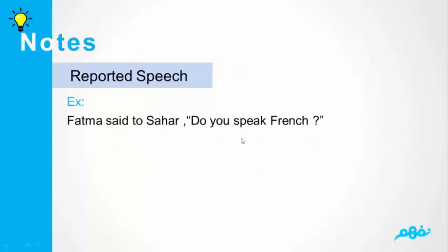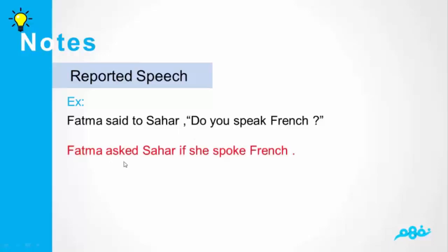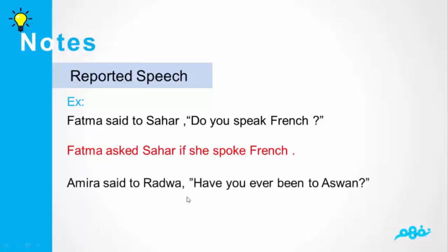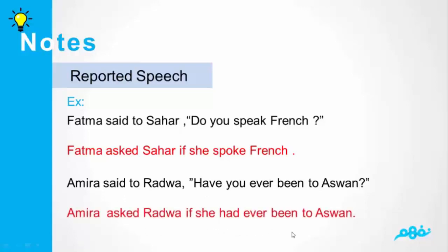فاطمة said to سحر — هنحول said لـ asked لأني عندي سؤال. السؤال بيبدأ بفعل مساعد، يبقى هنربط بـ if أو whether. فاطمة asked سحر if she spoke French. عملناها past عشان دي جملة خبرية. Example تاني: أميرة said to ردوة — have you ever been to Aswan? نفس اللي فات: هنشيل said، خليها asked، وهنربط بـ if. أميرة asked ردوة if she had ever been to Aswan. So simple.